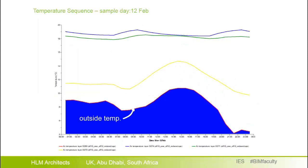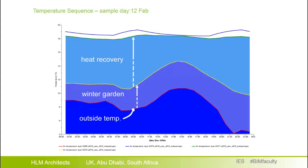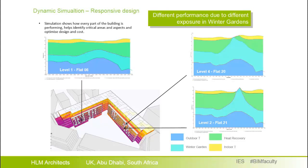Here is a simulation snapshot on a winter day, illustrating the temperature sequence as air passes through the different systems. Starting with the outside temperature shown in blue, air passes through the winter garden, then through the heat recovery system, reaching almost the required temperature. Finally we see the internal temperature within the rooms, provided by radiators, internal gains, or solar gains. The same pattern is shown in three different locations — three different winter gardens in the building — and the differences are due to their position and the different solar radiation at each location.